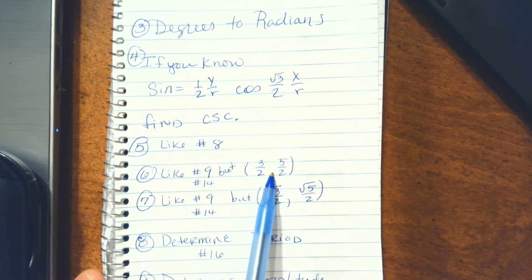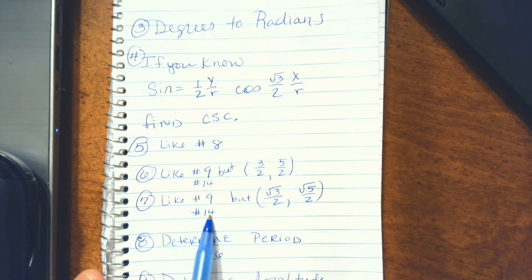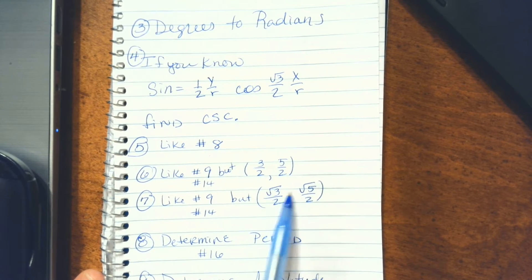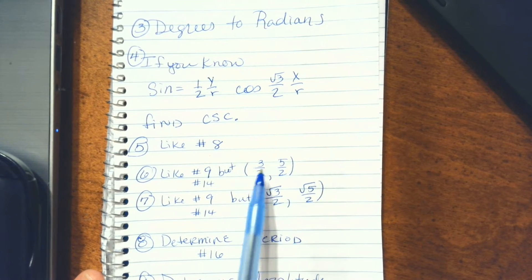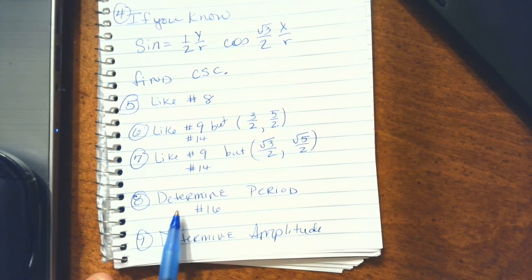Number five is like number eight on the study guide. Number six is like number nine, but with fractions, also like number 14. Seven falls into the same category, but it has some square roots, so be careful when you're plugging those in that you handle those square roots and fractions properly.